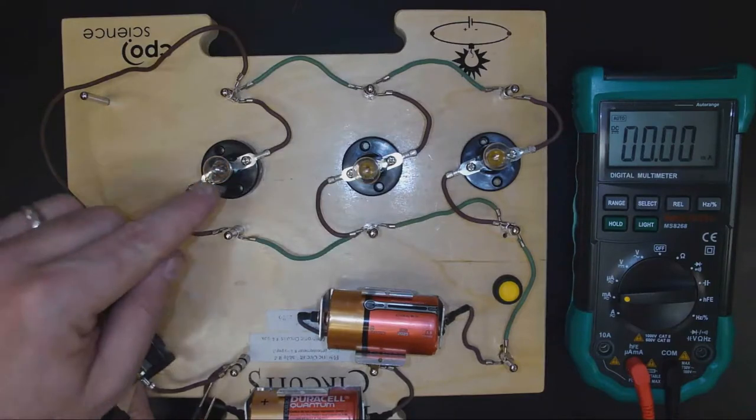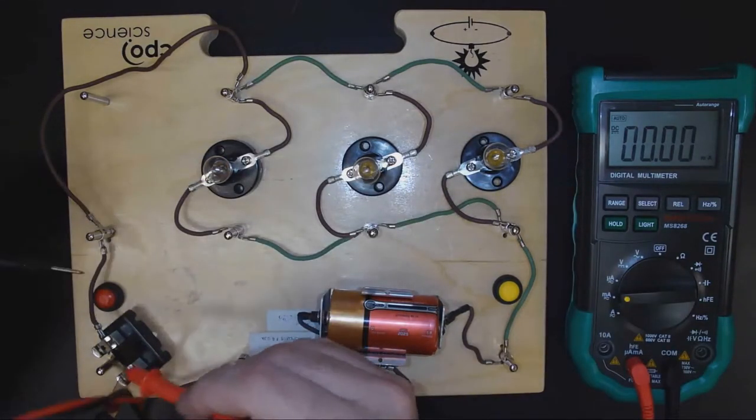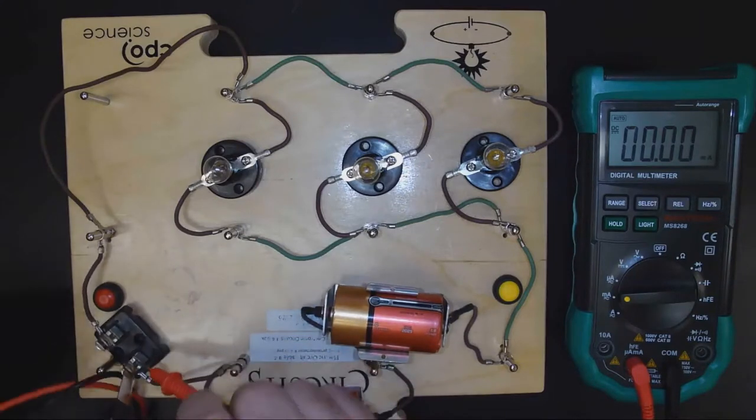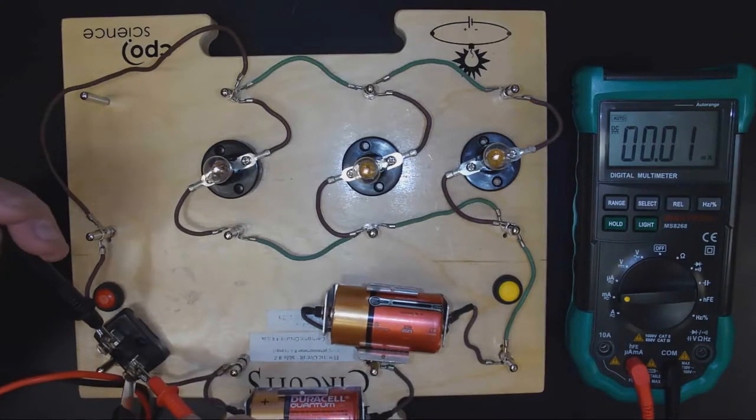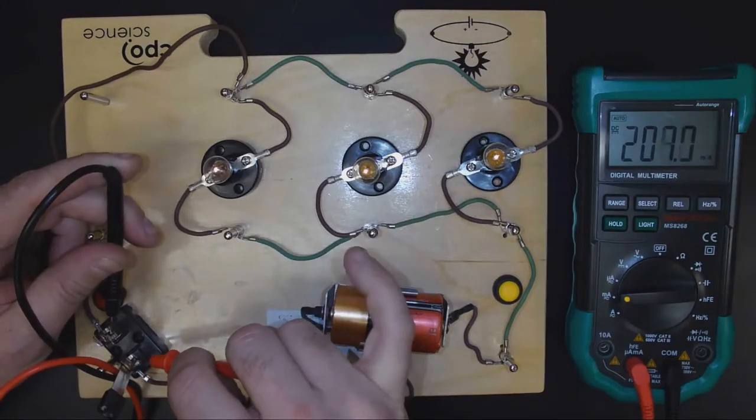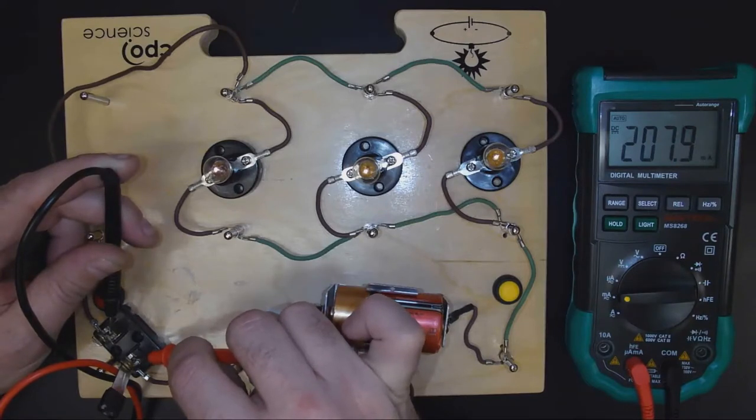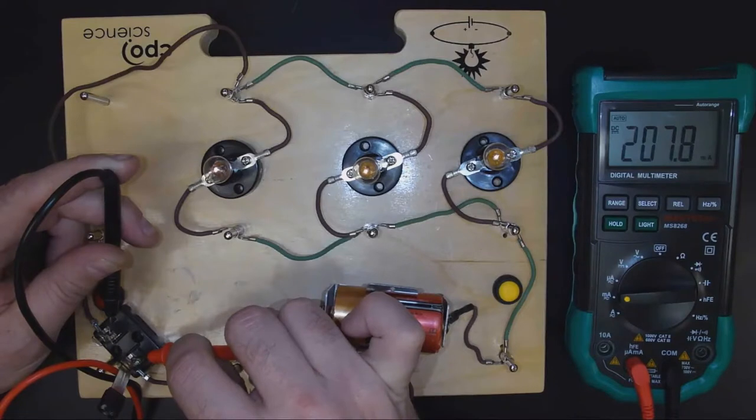And so I open up the switch, and I notice that all my light bulbs go out. I take my meter, and I put one probe in one of the square holes, and the other probe in the other square hole, and I notice that my light bulbs light up, telling me that I'm measuring this correctly. And I get 207.8 milliamps.